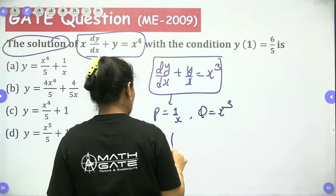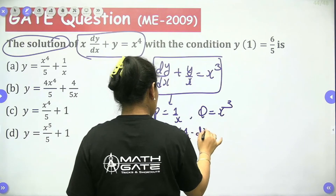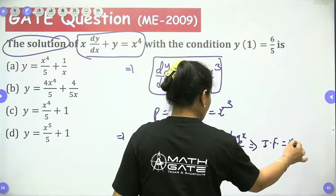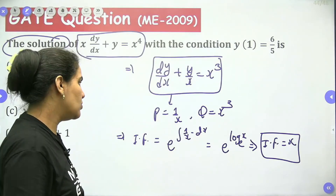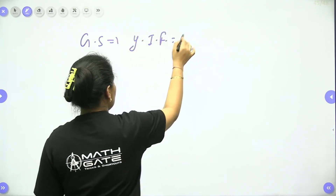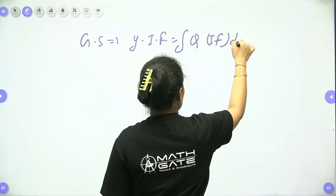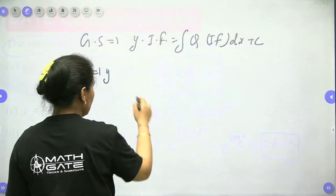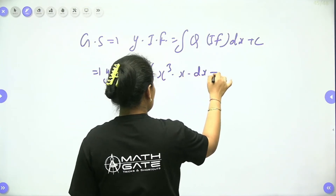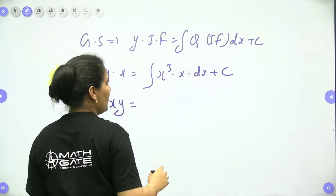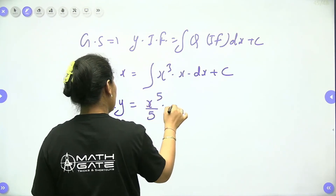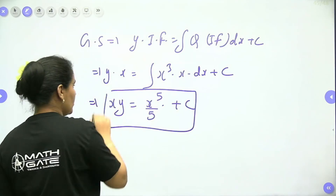The question asks for the solution. The general solution is y times the integrating factor equals the integral of q times the integrating factor dx plus c. So y·x equals the integral of x³·x dx, which is x⁴ integrated to x⁵/5, plus c. So xy equals x⁵/5 plus c.